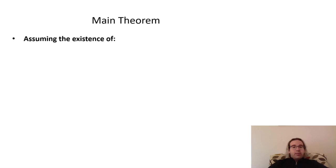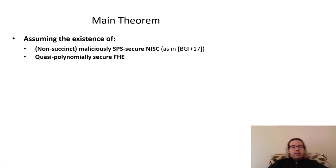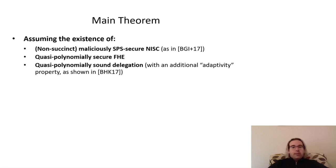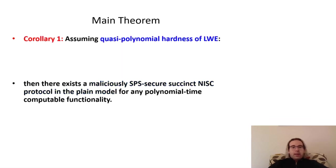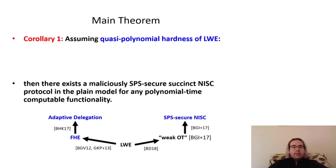Our main theorem shows that, given three primitives: a non-succinct, maliciously SPS-secure, non-interactive secure computation protocol like that of Badr-Narayanan et al., quasi-polynomially secure fully homomorphic encryption, and quasi-polynomially sound delegation with the adaptivity property that the first round is independent of the functionality, we can construct, in the plain model, a maliciously SPS-secure NISC with succinctness which computes any polynomial time-computable functionality. As a corollary, our protocol can be based on quasi-polynomial hardness of the learning with errors assumption: Prakersky et al. constructs an adaptive delegation scheme from FHE, which can be based on LWE, while the NISC of Badr-Narayanan et al. can be constructed from a variant of oblivious transfer they refer to as weak OT, which can also be instantiated using LWE.